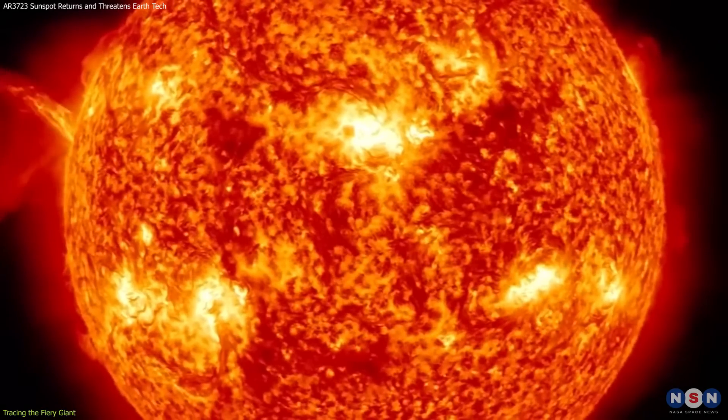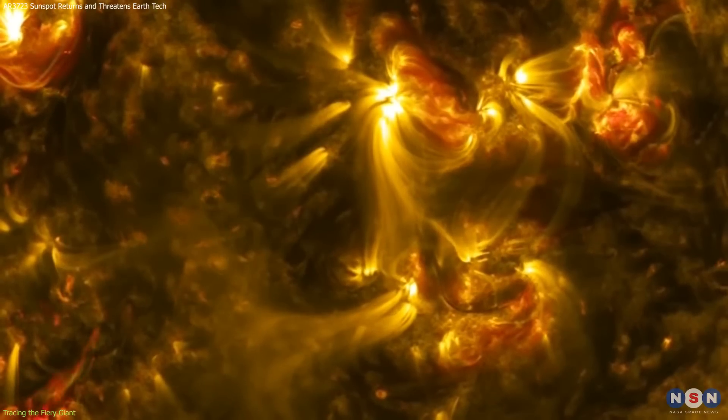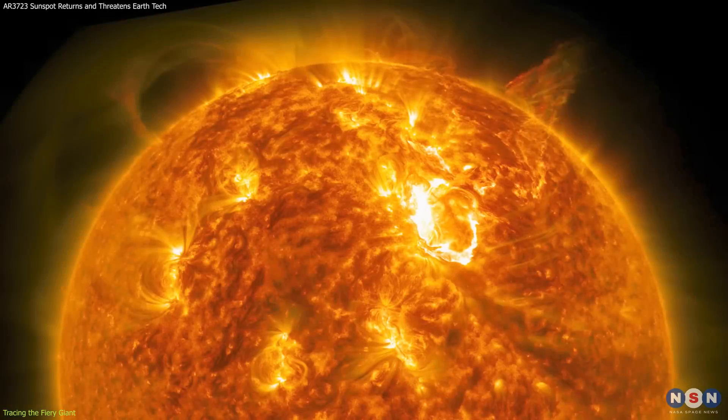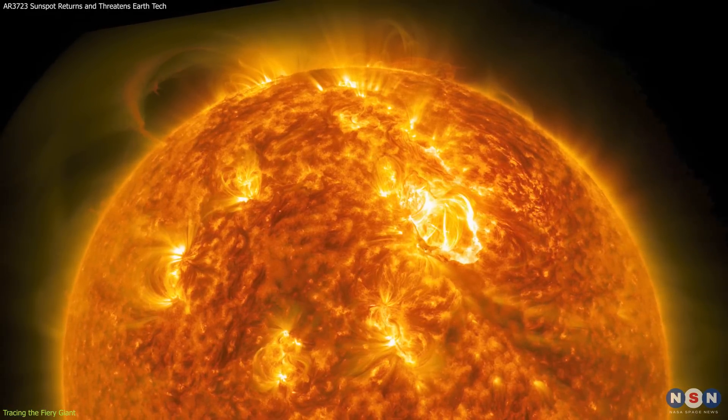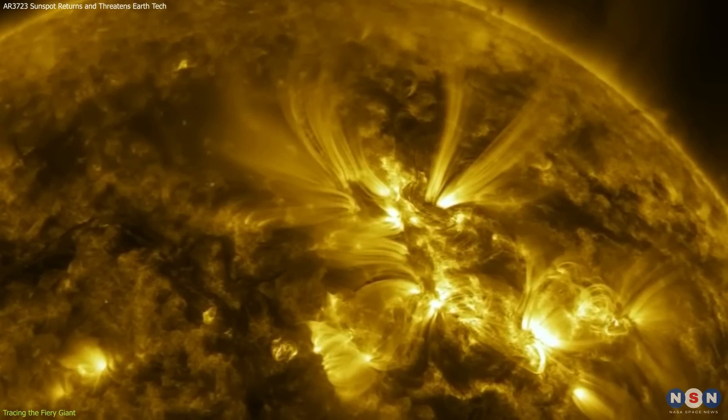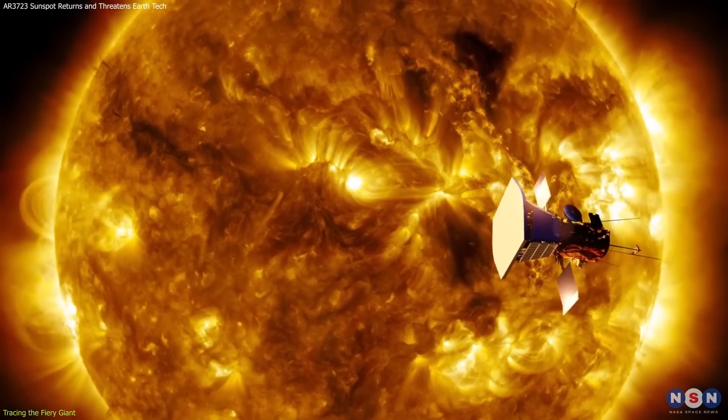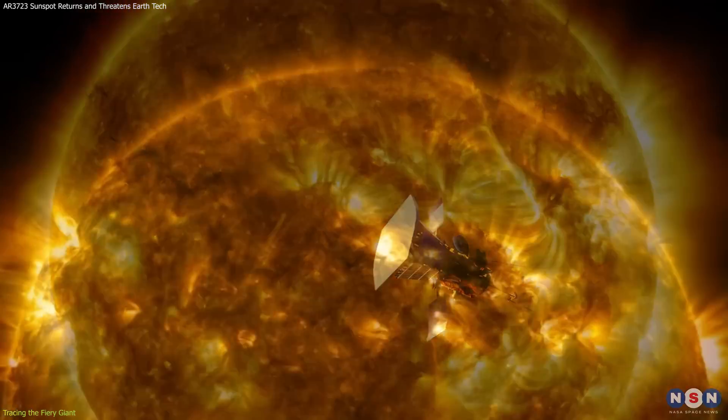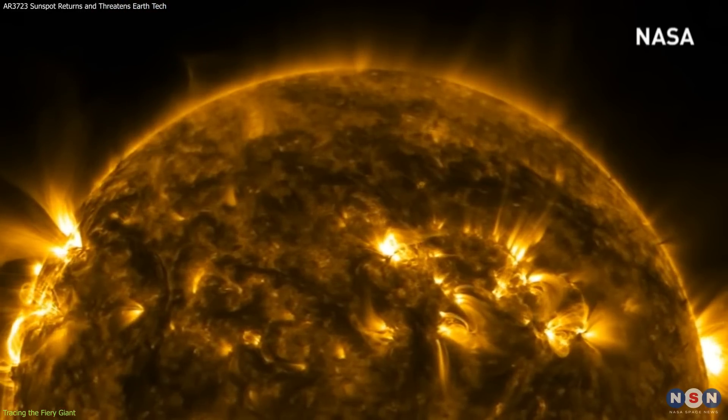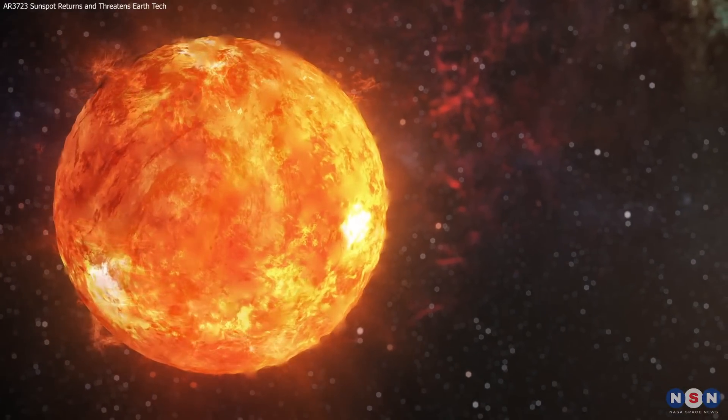Sunspots are characterized by their magnetic complexity. AR 3723, with its tangled magnetic field lines, is prone to magnetic reconnection events. These events release immense amounts of energy in the form of solar flares and coronal mass ejections. Understanding this process is crucial for predicting when and how these reconnections might occur. The study of its evolving magnetic structure provides insights not just into the sunspot itself, but also into the larger solar cycle, which is the periodic change in the sun's activity and appearance over approximately 11 years.